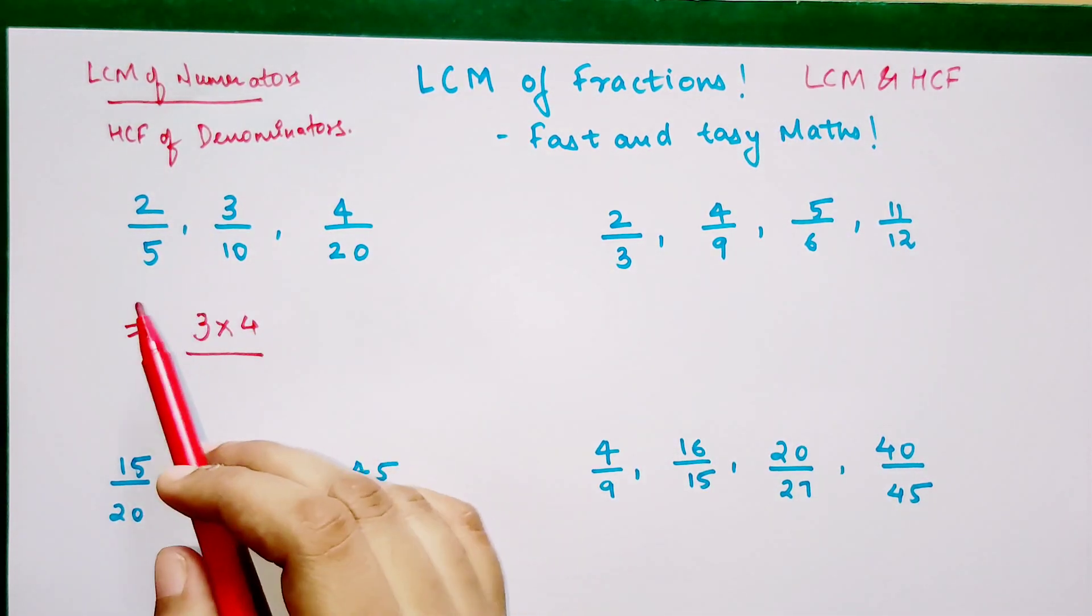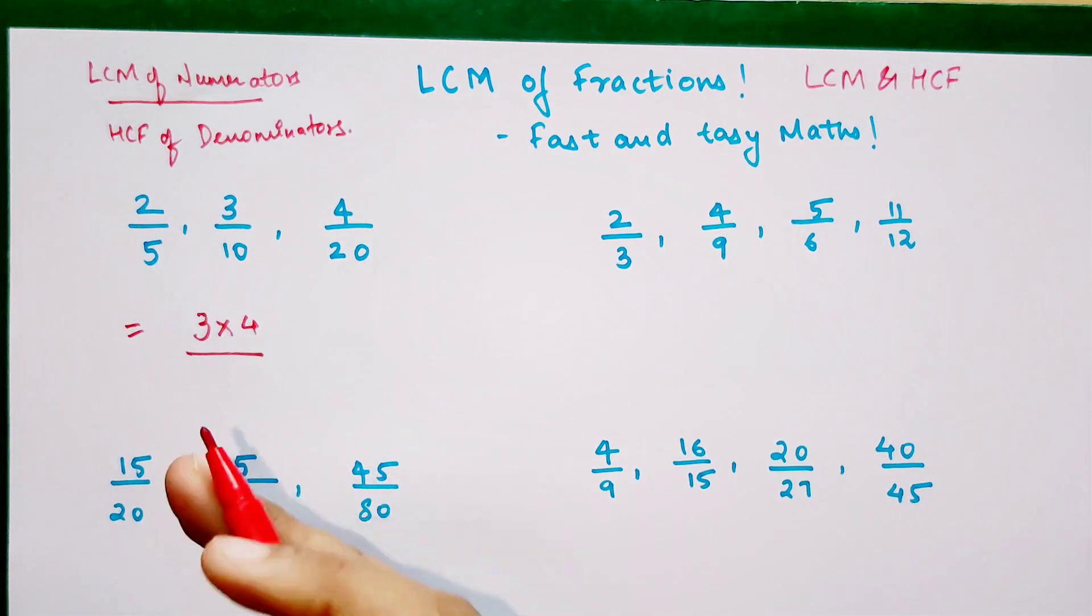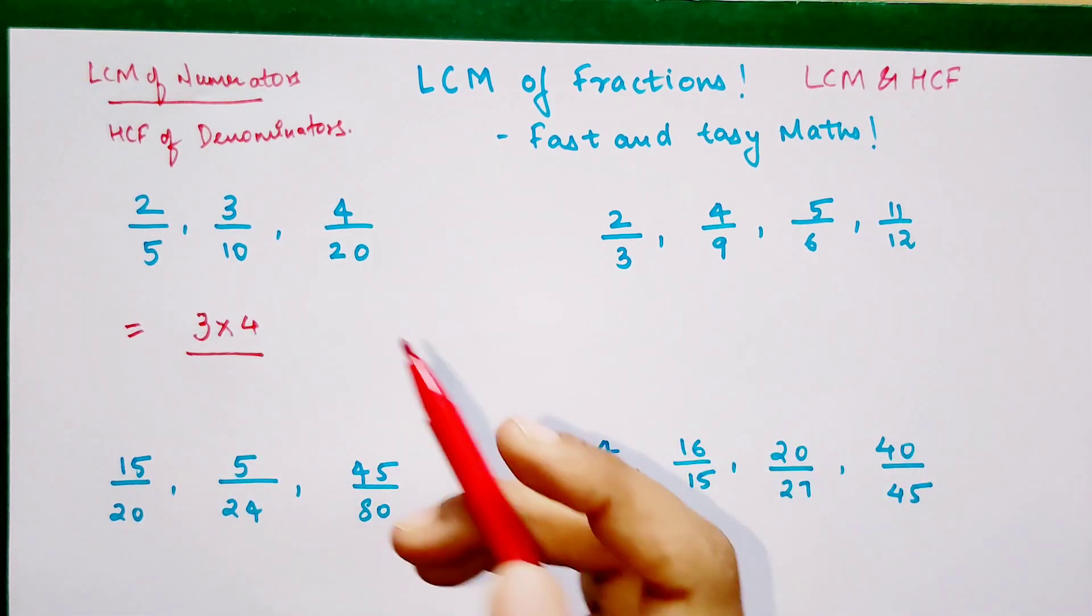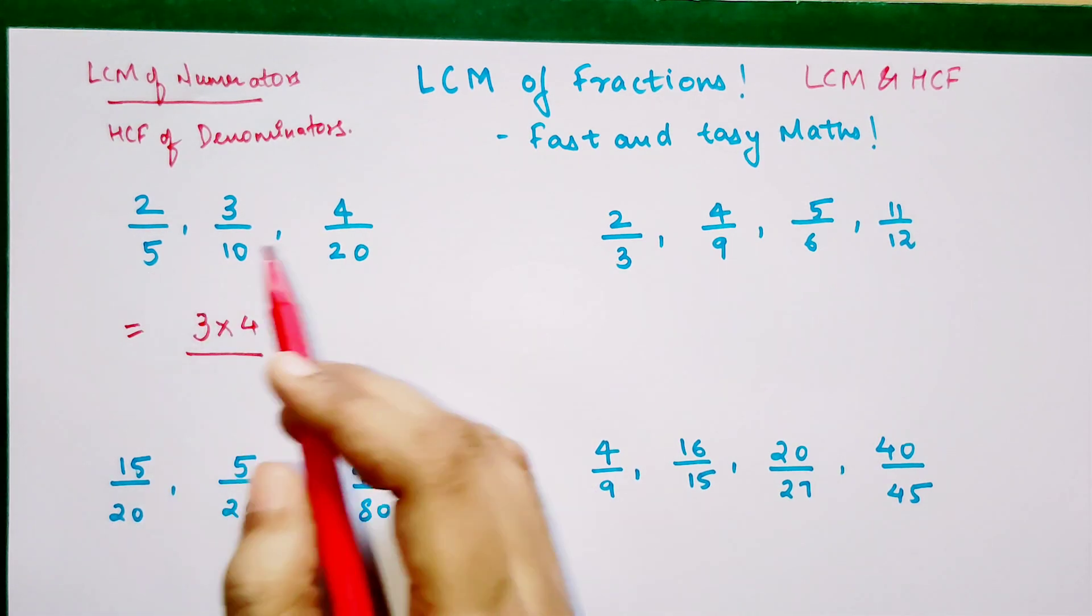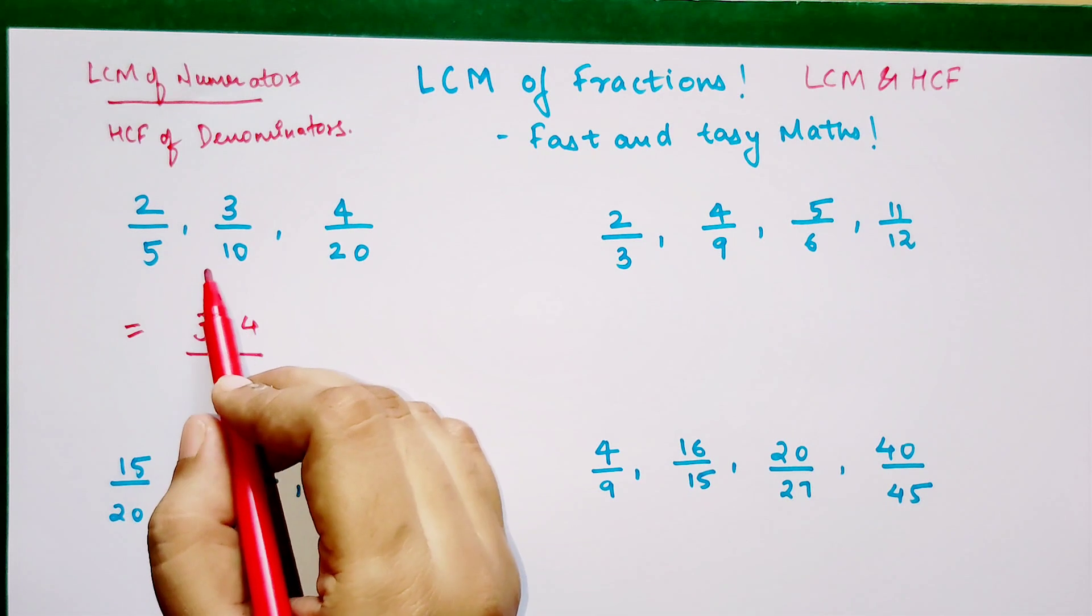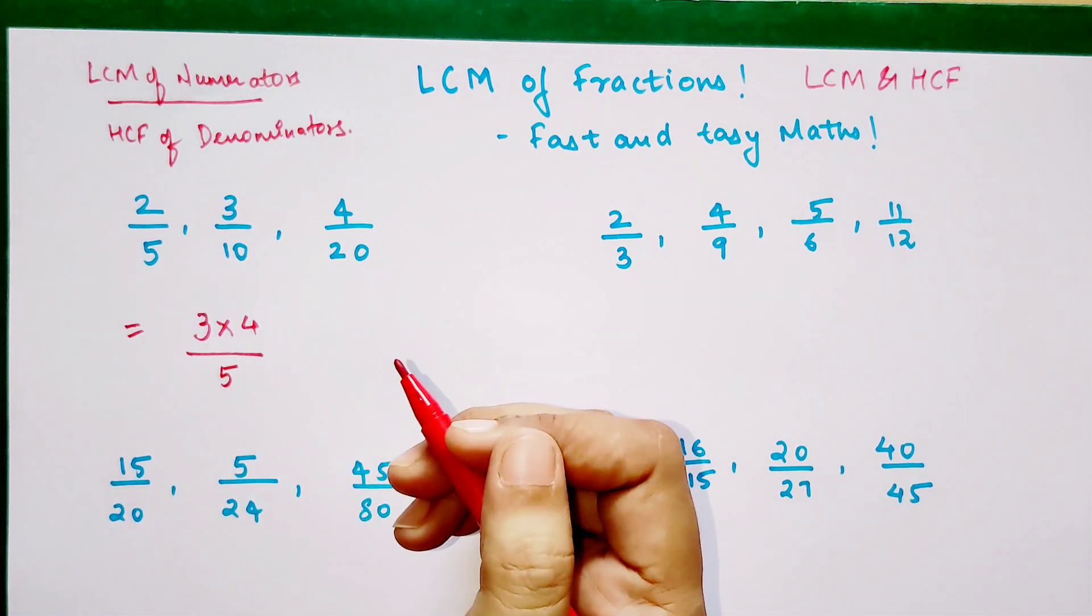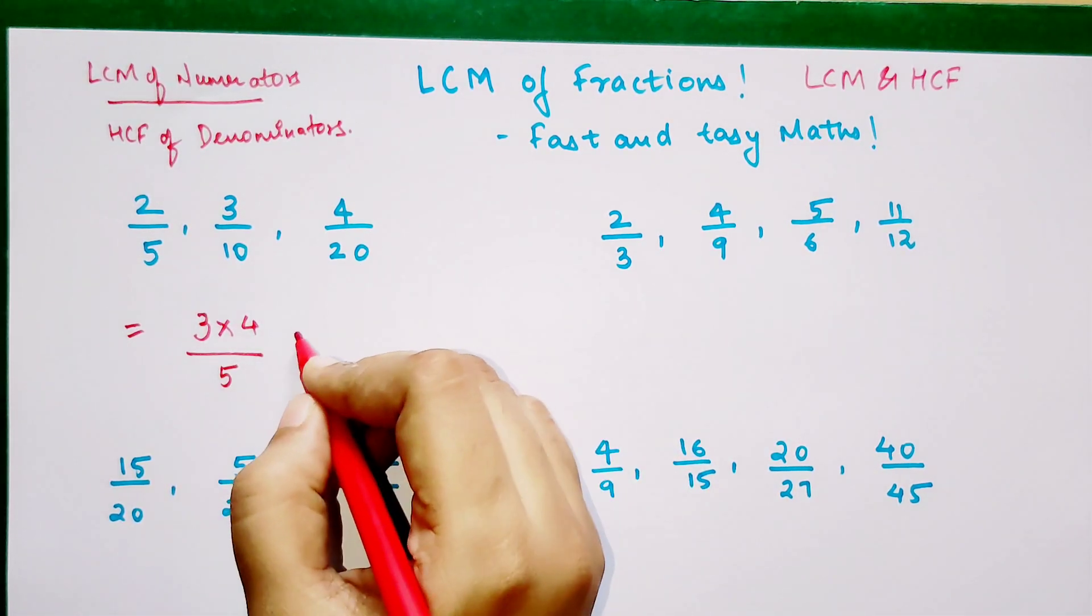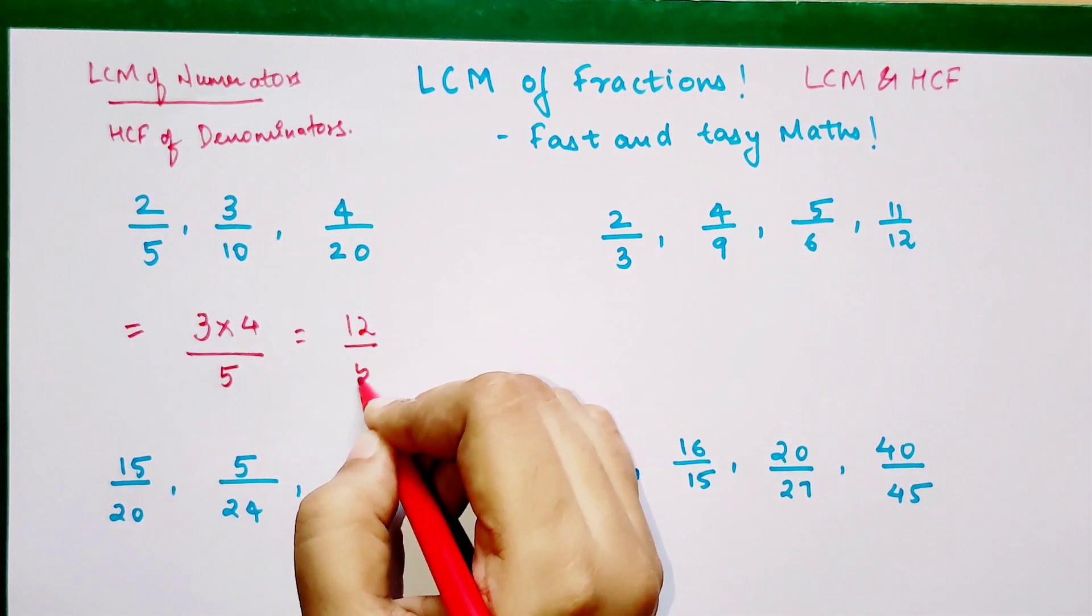So what is the HCF over here? Basically that means highest common factor. So the HCF over here would be 5. Why 5? Because 5 is the only number which is going in all of these denominators. So your final answer would be 12 upon 5.